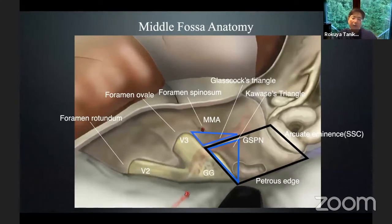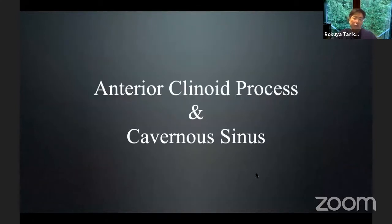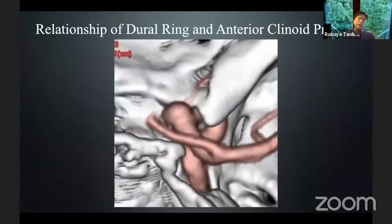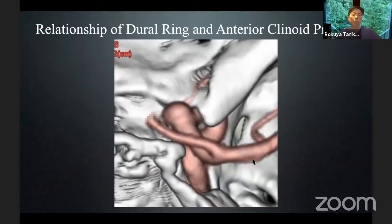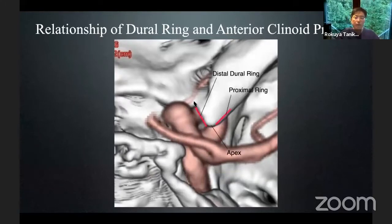This is very important anatomy to understand the middle fossa. First, I'll show you a brief description of the anterior clinoid. This is a CT angiogram, upward view, to see the anterior clinoid process. Here is the apex, and the medial edge of the anterior clinoid process indicates the GSPN is right here. The lateral edge of the process indicates the proximal ring.